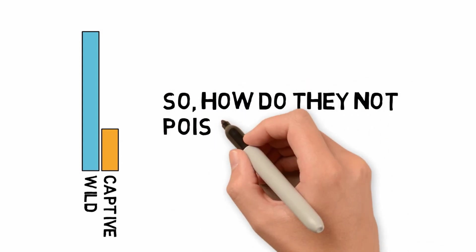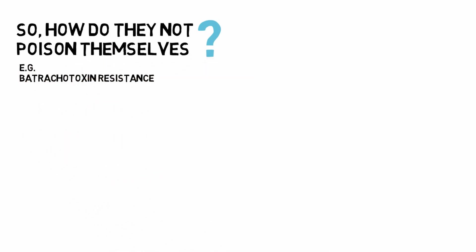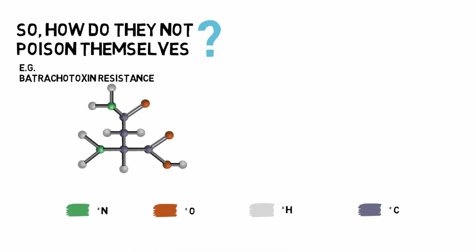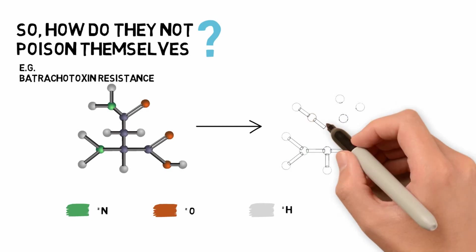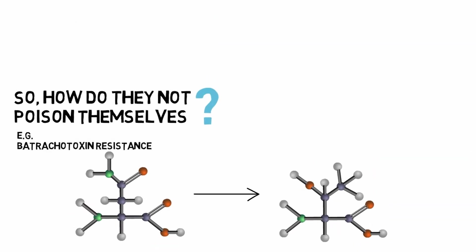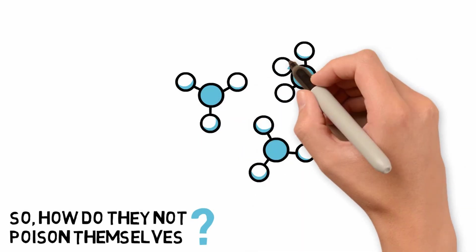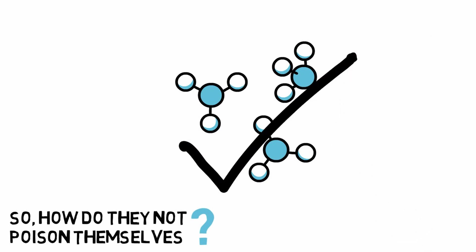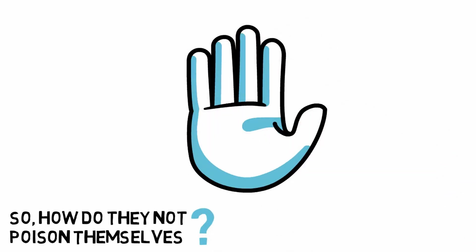So, how do they not poison themselves? Frogs that store and secrete batrachotoxin, for example, have a single amino acid mutation within their version of the sodium ion channel protein — in this case, asparagine is replaced by threonine. This mutation doesn't alter the protein's properties, except creating a resistance to batrachotoxin, allowing the frogs to accumulate it without risking death. Genetic mutations caused by other unique amino acid replacements cause immunity to the other poisons in a similar way.